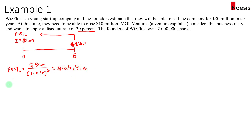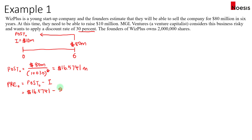If you're calculating the pre-money valuation, you take the post-money valuation minus the investment. So which means that before the investment of $10 million went in, the company is only worth $6.5741 million.